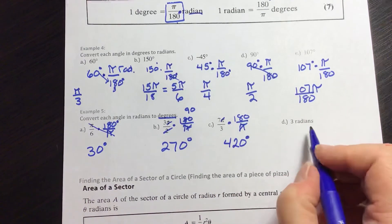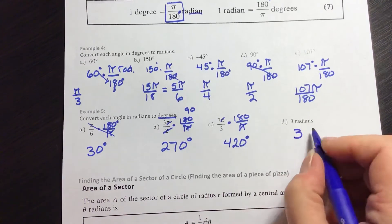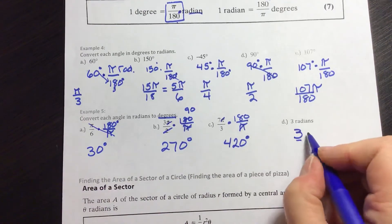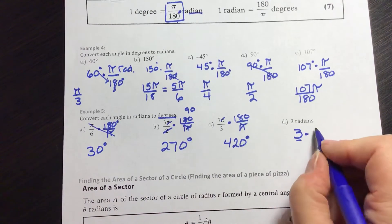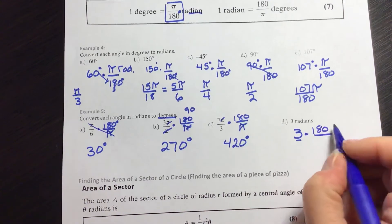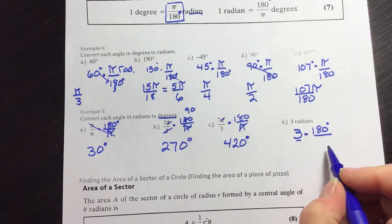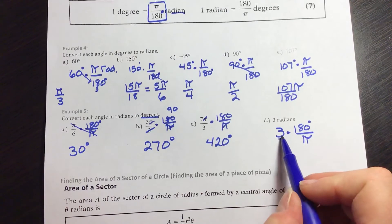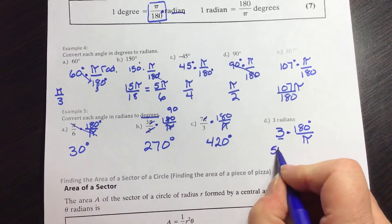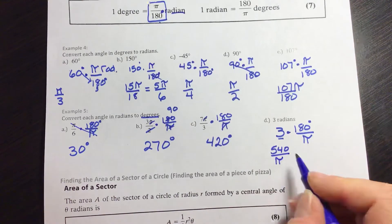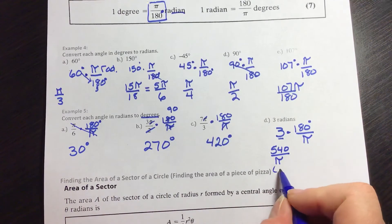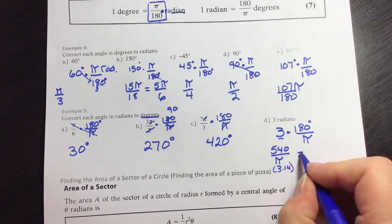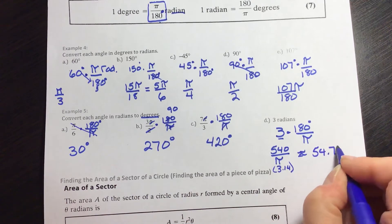If I have 3 radians — without a π — I still multiply by 180/π. So 3 × 180 = 540, divided by π. Dividing by 3.14 gives approximately 171.89 degrees.